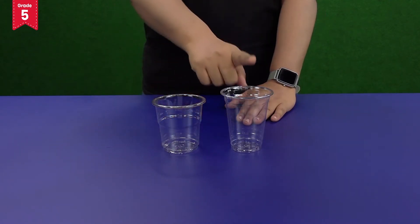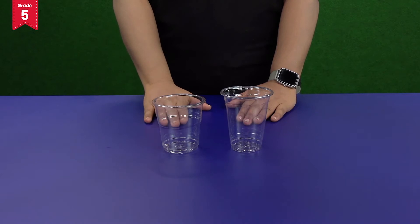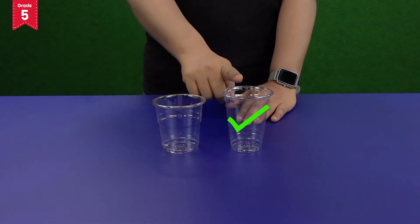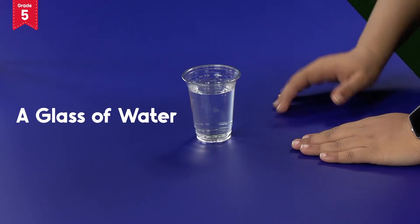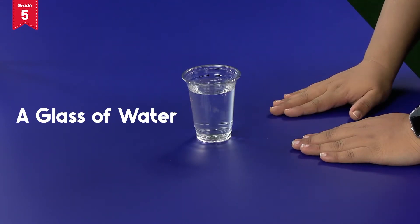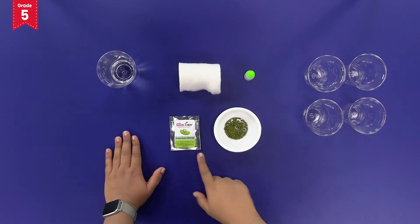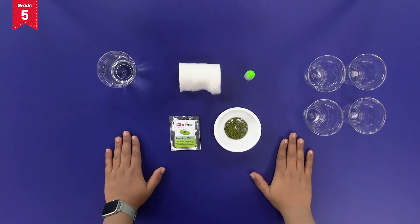Your box contains two types of disposable glasses. You will need the bigger ones for this activity. You will also need a glass of water from your home. Take out all the green gram seeds from the packet.